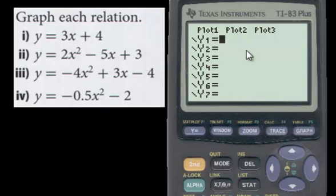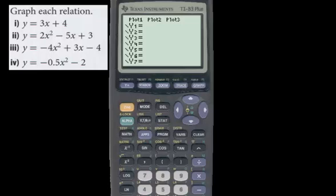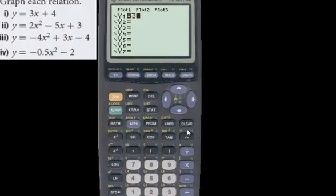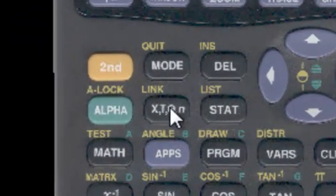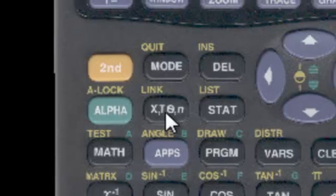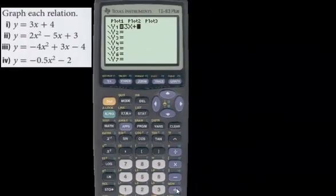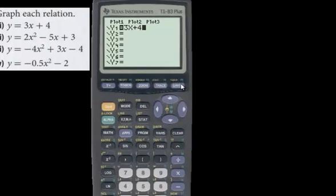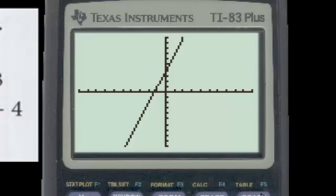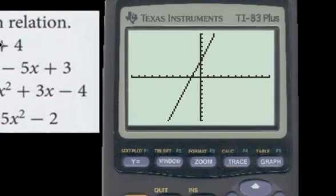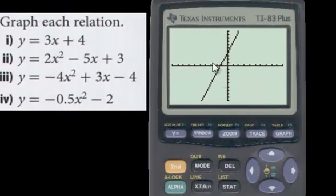So let's type in 3x plus 4 right here. So you go 3. Now watch where the x button is right here. 3x plus 4. Then hit graph. And look at that. And surprise, surprise, it is a first degree equation because there's an invisible 1 up here. And so you get a straight line.